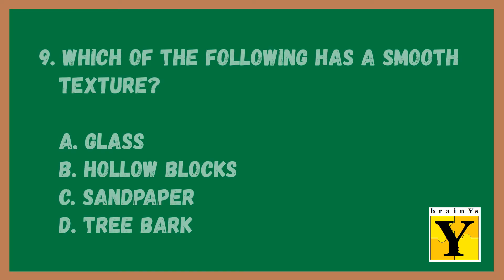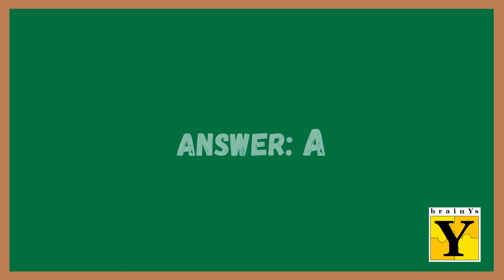Number nine: Which of the following things have smooth texture? A. Glass, B. Hollow blocks, C. Sandpaper, D. Tree bark. The answer is A.